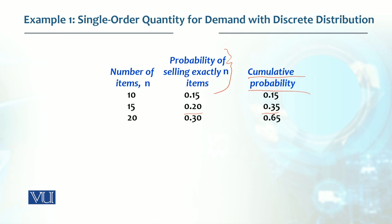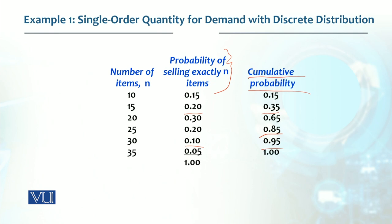If we have 25 items, the demand probability is 30 percent and cumulative becomes 65 percent. For 30 items, the demand probability is 20 percent and cumulative becomes 85 percent. Similarly, for 35 items, the probability is 10 percent and cumulative is 95 percent. The last entry is 35 units with 5 percent probability, giving cumulative 100 percent. So we bring the probability up to 1.